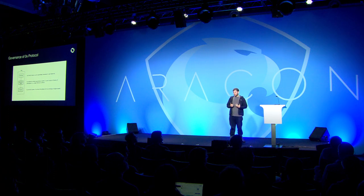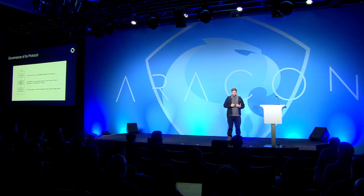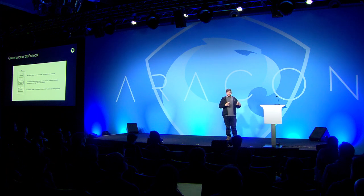The stateful system can be any arbitrary system. But for the purposes of this presentation, it's much easier to think about metamodels if we focus on a specific example. The specific example we're going to focus on is 0x, because we're more familiar with that than most other systems. 0x protocol is a system used to facilitate the peer-to-peer exchange of digital assets on the Ethereum blockchain. It is a stateful system that is governed, and at a high level you can think of it as having a governance token — an ERC-20 token. These token balances control a governance system, which in turn controls a canonical system of smart contracts that facilitates the exchange of digital assets.